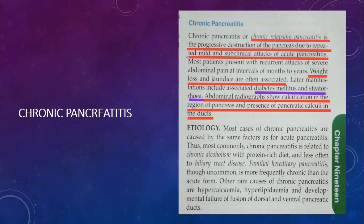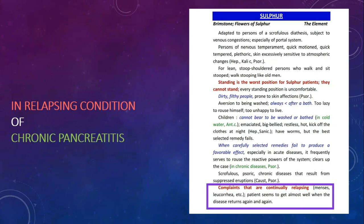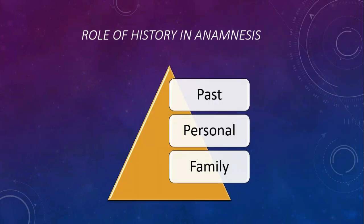Chronic pancreatitis or chronic relapsing pancreatitis is the progressive destruction of the pancreas due to repeated mild and subclinical attacks of acute pancreatitis. Weight loss and jaundice are often associated. Later manifestations include diabetes mellitus and steatorrhea. Abdominal radiograph shows calcification in the region of pancreas and presence of pancreatic calculi in the ducts. In relapsing condition of chronic pancreatitis — in Sulphur: complaints that are continually relapsing, patient seems to get almost well when the disease returns again and again.